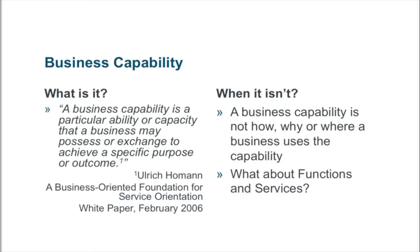The distinction between the what versus the how is really important. Understanding that distinction will help us avoid getting caught in the trap of discussing down-in-the-weeds detail about current processes and operations, really ensuring that architects can maintain a view of the business at a sufficiently abstract level to clearly identify where gaps are occurring, where overlaps and redundancies exist today, and where to prioritize investments and change efforts to achieve tomorrow's vision.